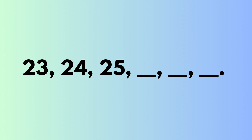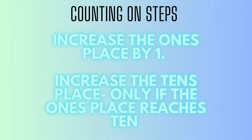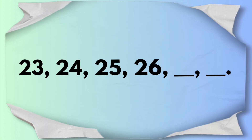Let's start at 23: 23, 24, 25. What are the next three numbers? When counting on by 1's, you always increase the 1's place by 1. You only increase the 10's place if the 1's place reaches 10. So after 25, the 1's place becomes a 6 to get 26, then comes 27, then comes 28.